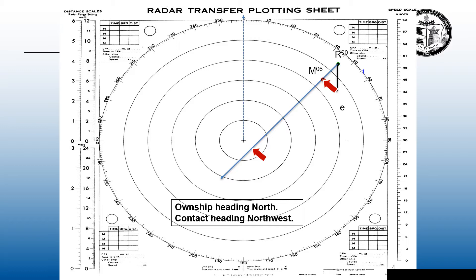Then when you look out off your starboard quarter, you will be able to see both sidelights and masthead lights. Then when it passes closest point of approach, you'll be able to see the starboard light and sidelights.